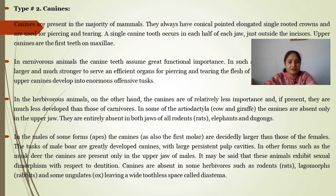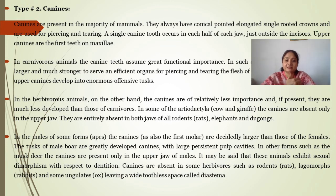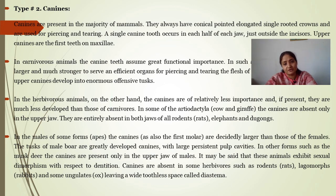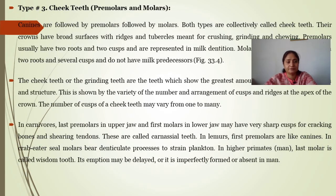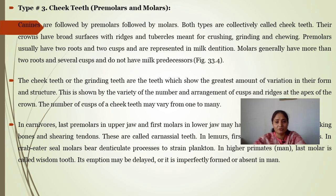In musk deer, canines are present only in the upper jaw of the male. It may be said that the male animal exhibits sexual dimorphism with respect to dentition — dentition is different between male and female. Canines are absent in some herbivores such as rodents, lagomorphs, rabbits, and some ungulates like ox, leaving a wide toothless space called diastema.